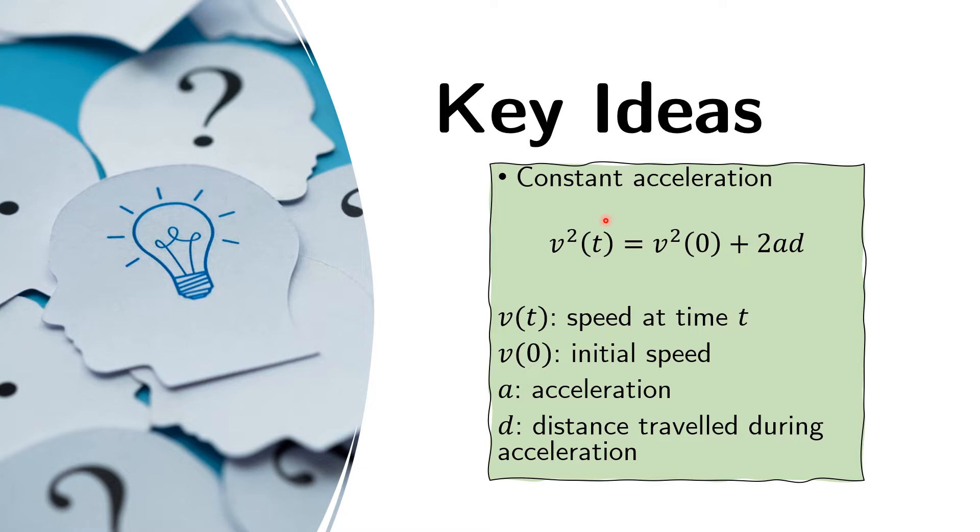We can get the final speed from the initial speed, the acceleration, which should be constant. So this only works for constant acceleration. And here the d is the distance traveled during the acceleration. So from this we can get the final speed.